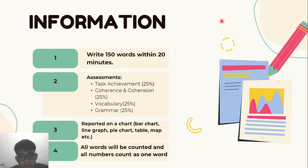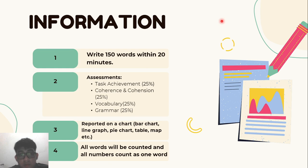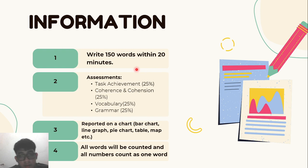Before I give you the important tips, I want to give you some information about what you have to accomplish when you do IELTS Writing Task 1. First: write 150 words within 20 minutes. Make sure you write the word count requested — if you want to write more that's fine, but don't write less than 150.